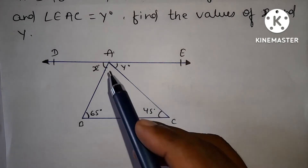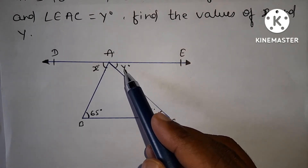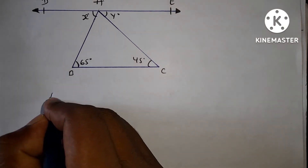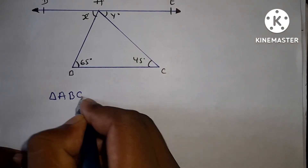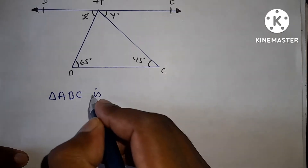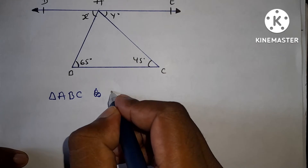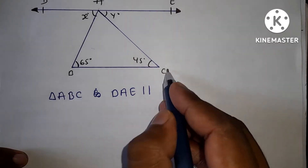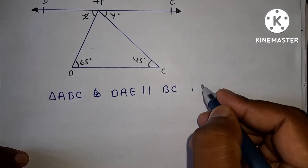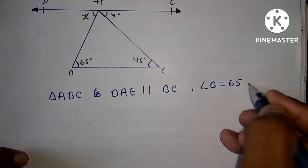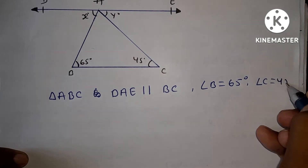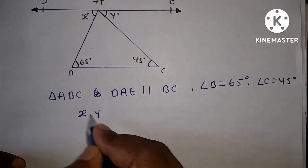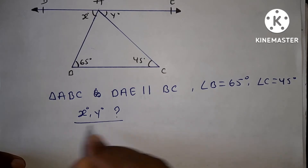तो आपको क्या करना है — x और y की value को find out करना है। तो देखो, triangle ABC है, उसमें DAE जो है parallel to BC है, angle B equal to 65 degree और angle C equal to 45 degree। और X degree और Y degree की value को evaluate करना है।